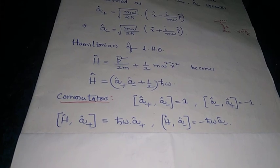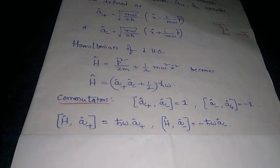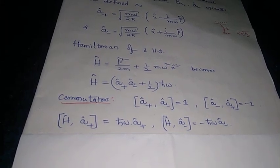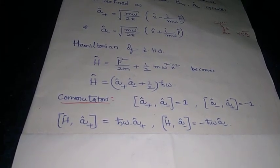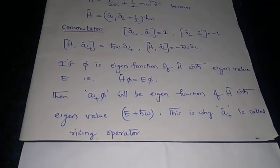The commutator of H with A plus is A plus into H bar omega, and the commutator of H with A minus is minus A minus into H bar omega.